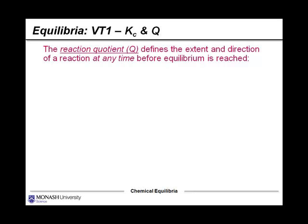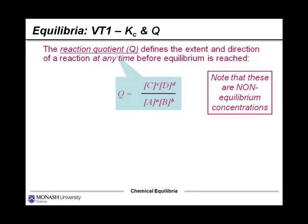K goes hand-in-hand with the reaction quotient Q. Q defines the extent and the direction of a reaction at any time before the equilibrium has been reached. So the equation for Q is actually exactly the same as the equation for K. But note that in this case, the concentrations in square brackets are non-equilibrium concentrations.